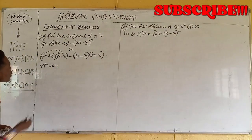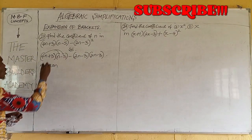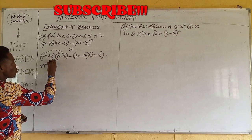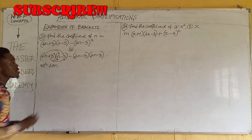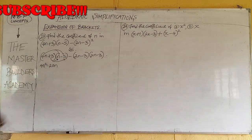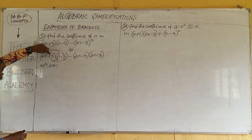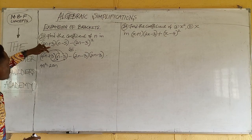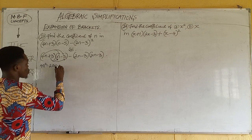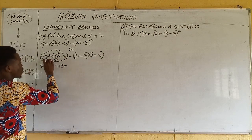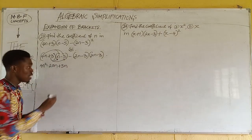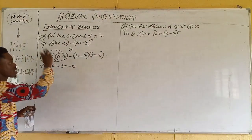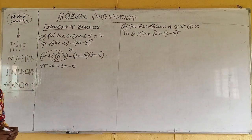Now we come to the second term in the first bracket, which is plus 3. We also multiply the two terms in the second bracket. So we are going to have plus 3 times n, which gives us plus 3n. And plus 3 times minus 5, which gives us minus 15. Don't forget: minus times plus is minus.